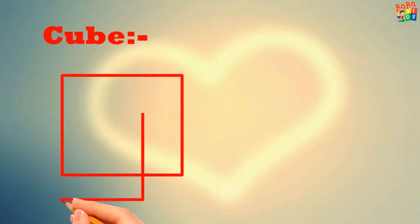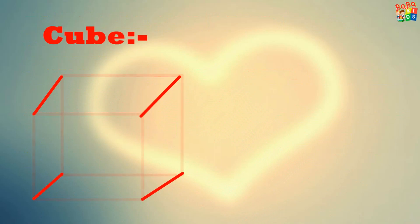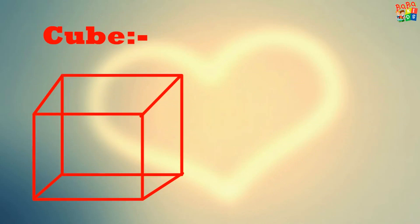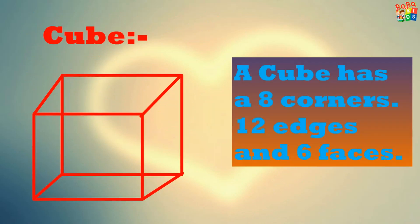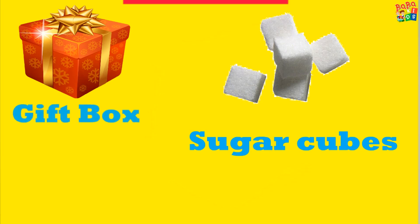The first shape is cube. Children, look here — this is a cube. A cube has 8 corners, 12 edges, and 6 faces. This gift box is a cube shape, and all these sugar cubes are also in cube shape.